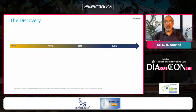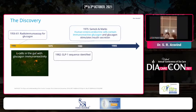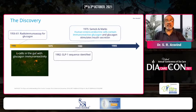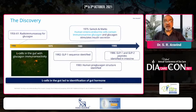The discovery started in 1956 when the radioimmunoassay for glucagon was done, and then it was realized that L cells in the gut showed glucagon immunoreactivity. People at that time thought that glucagon probably stimulates insulin secretion. In 1982, the GLP-1 sequencing was identified. The human pro-glucagon structure was identified between 1980 and 1985, and in 1986, both GLP-1 and GLP-2 were identified. It was the L cells in the gut that led to the identification of this gut hormone.